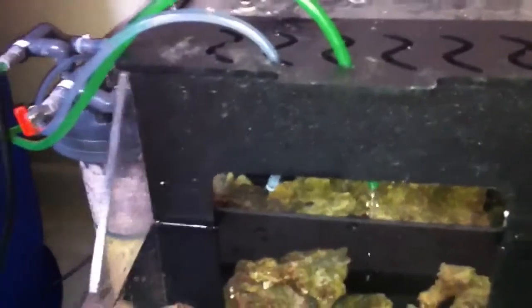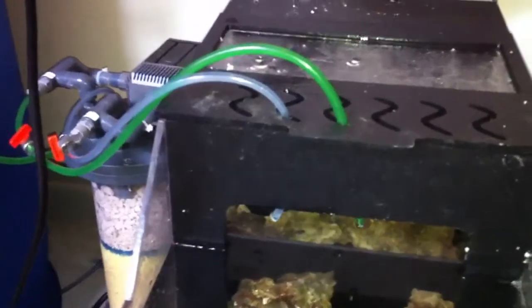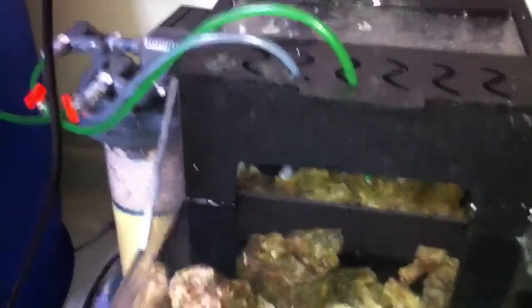and then one drop per second out of the effluent, and that unit really does help keep the nitrates in the tank down. It's rated for up to a 400 gallon system, so I'm not taxing that,